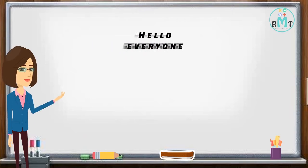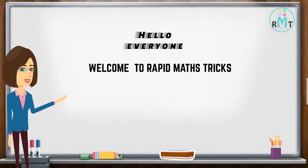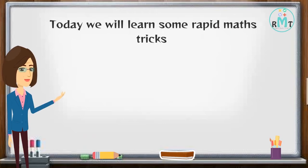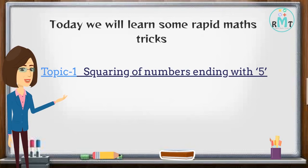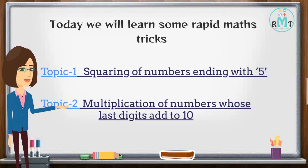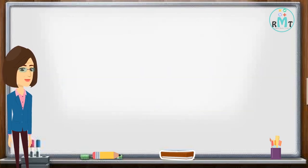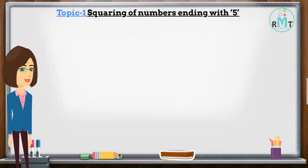Hello everyone, welcome to Rapid Math Tricks. Today we learn some rapid math tricks. Topic 1: squaring of numbers ending with 5. Topic 2: multiplication of numbers whose last digits add to 10. Now start Topic 1: squaring of numbers ending with 5.